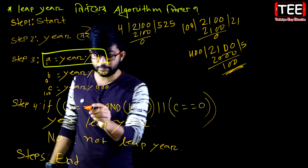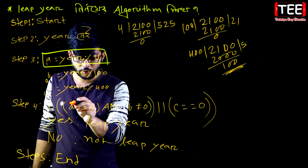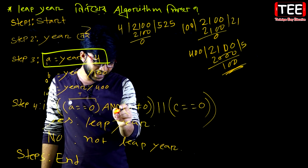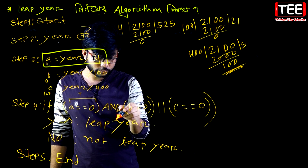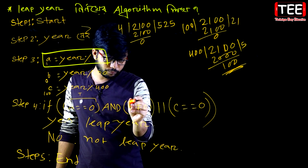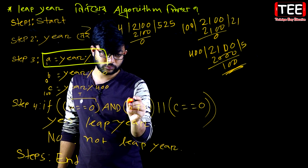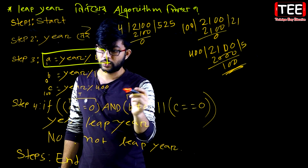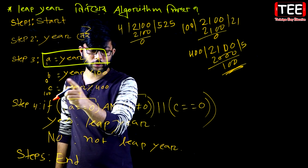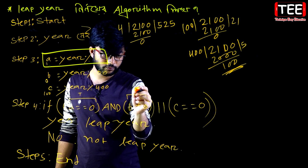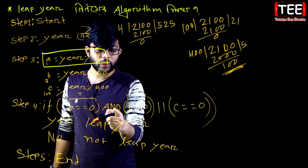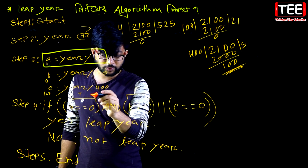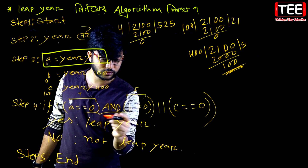Yeah, equal equal 0 — that means A part of the key is true. And above, B not equal 0 — no, A part of the key is false, because B not equal 0 is false. True and false — that ultimately the key is called false.